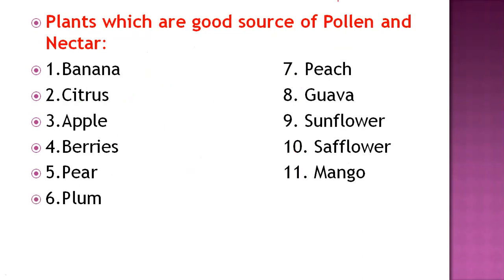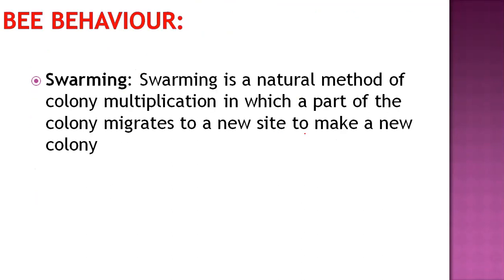Some plants provide both pollen and nectar — like banana, citrus, apple, berries, pear, plum, peach, guava, sunflower, safflower, and mango. Where sunflower and safflower plantations occur, many species of honeybees are found in tremendous numbers — making these very good sources of both pollen and nectar.